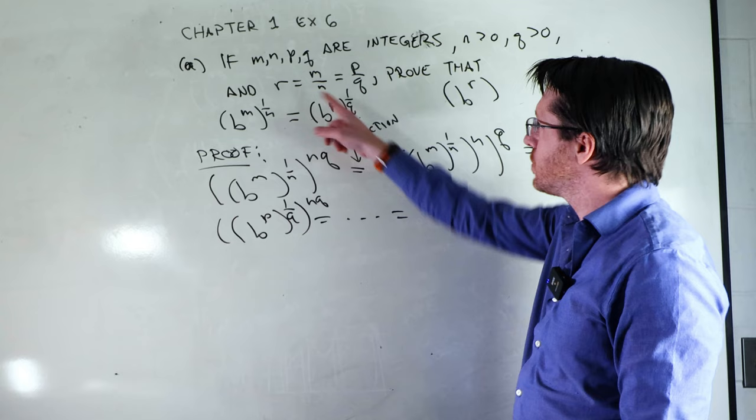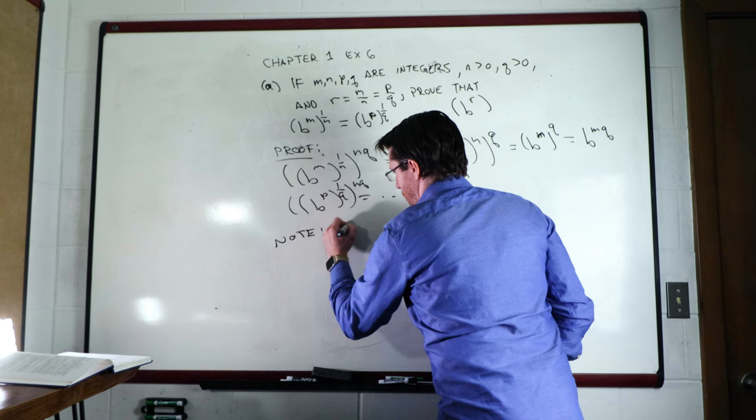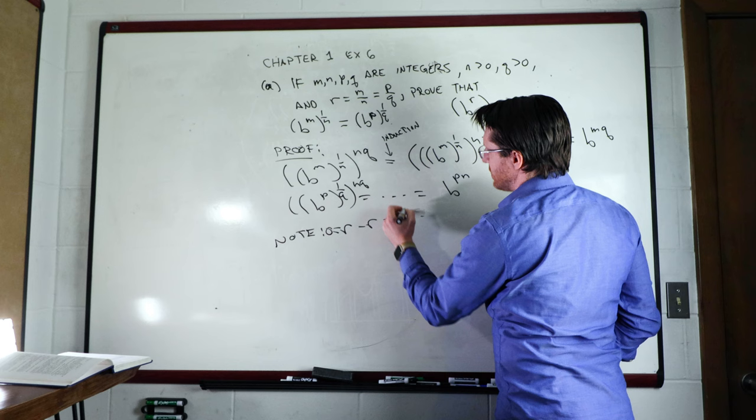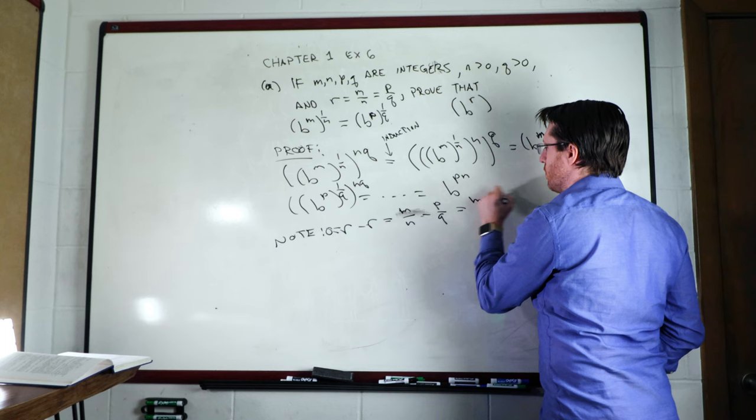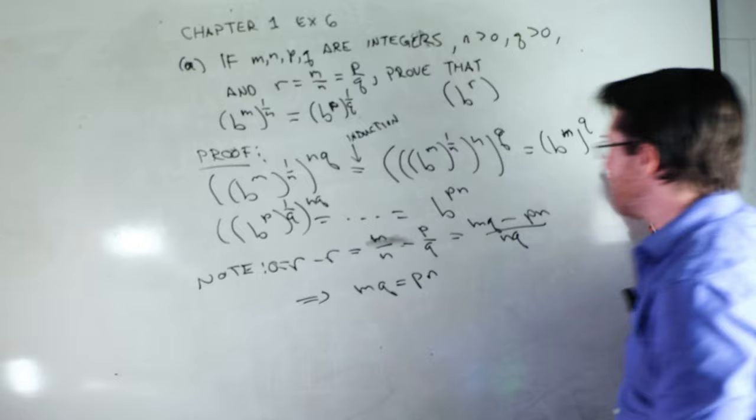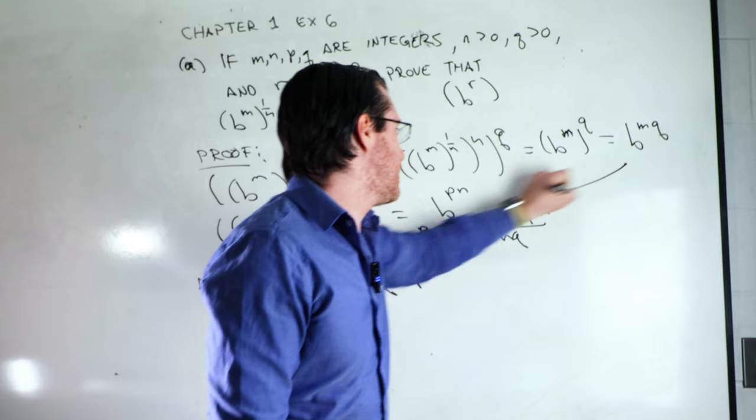And what we're gonna do is we're gonna take a look at R and we're gonna take a look at R minus R is zero. What we can do is we can go ahead and do our usual fraction stuff. So I'm gonna rewrite these guys as M over N minus P over Q, and then that's gonna give me MQ minus PN over N times Q. And the only way that this can be equal to zero is if MQ is equal to PN. But what do we have over here? We have MQ and we have PN.